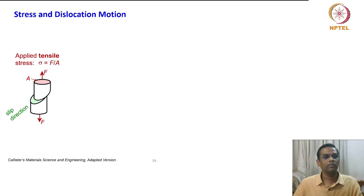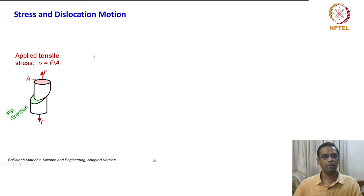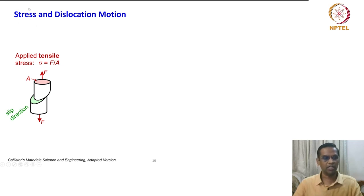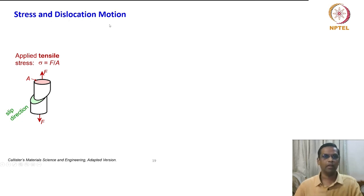We will see how dislocation proceeds. Dislocations proceed because of two aspects: first, because we are applying a load measured as stress, and because of that the dislocation moves in the crystal — that is the primary action that results in deformation.